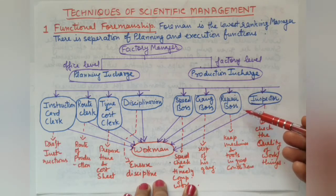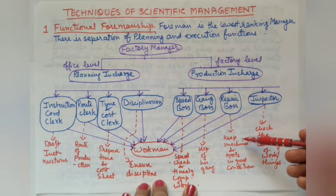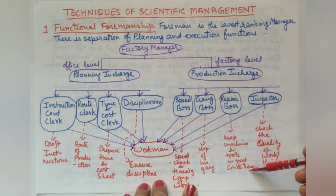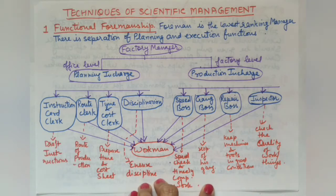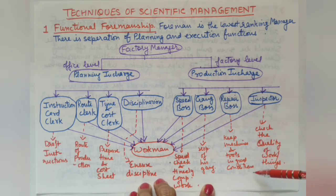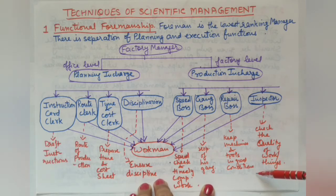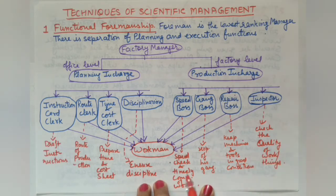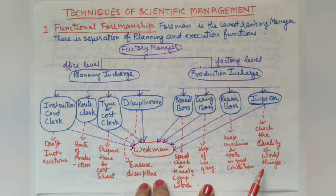The third is the Repair Boss, who ensures machines and tools are in good working condition so that production is not stopped and time is not wasted. The fourth is the Inspector, who checks the quality of the worker's output against the standards set in scientific management.